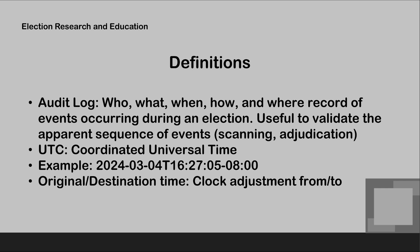We have UTC — Coordinated Universal Time. An example shows the date of March 4th, 2024, then a T followed by the timestamp. It's local time, then the UTC offset. Since our standard time here is eight hours behind Universal Time, you will see minus-08 at the end of the timestamp. Once you switch to Daylight Savings Time, it goes to minus-07. In the audit log, when a clock adjustment is made, you will find the original time listed and the destination time listed, so you know what time the system thought it was when the change was made and what time it adjusted to.